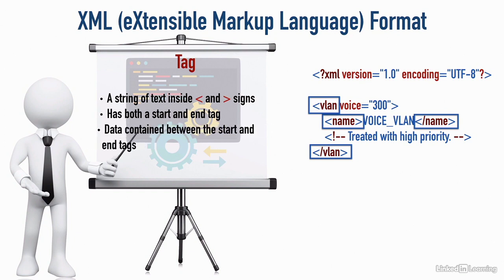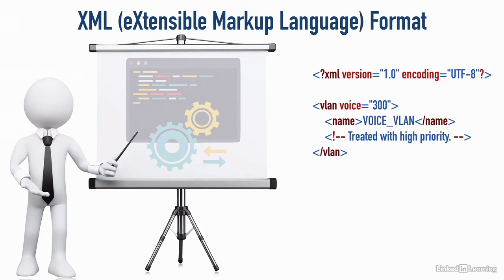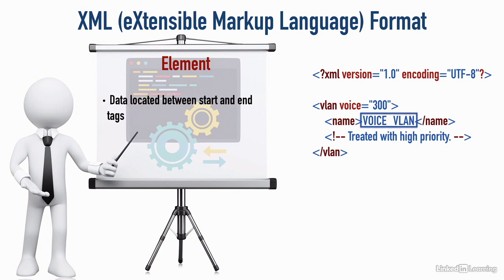Between those tags, we have data — for example, voice_VLAN. That's data contained in the name tag. We call that data an element. An element is the data located between the start and end tags. We can have elements within elements; in fact, we can go several layers deep in this hierarchical nesting if we need to.